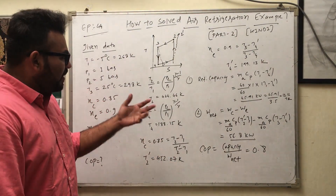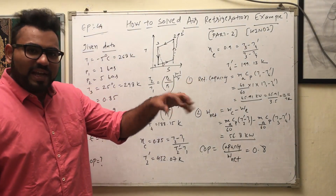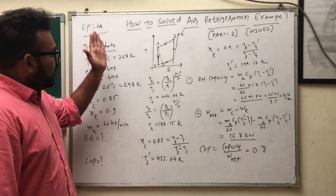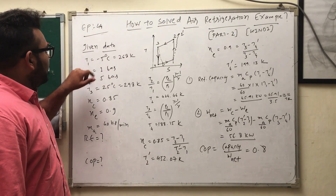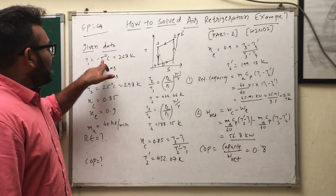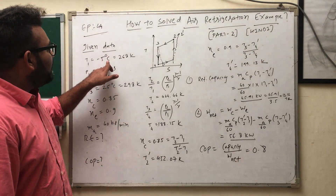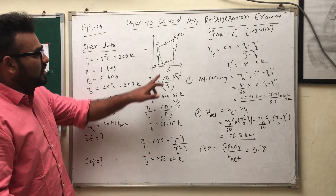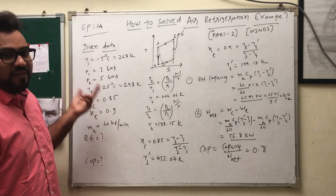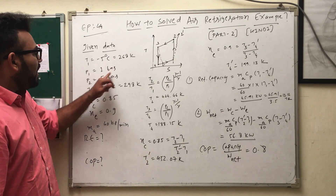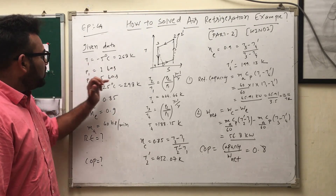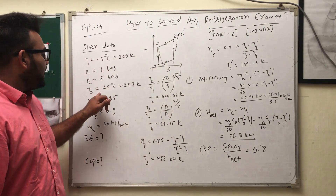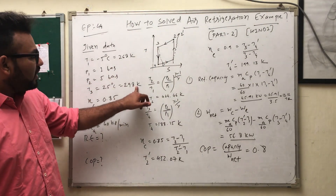This example uses the third trick. It works between pressures 1 bar and 5 bar — that means P1 = 1 bar and P2 = 5 bar. It gives the temperature after the cooler (after-cooler process 2→3): T3 = 25°C, which converts to 298 K.